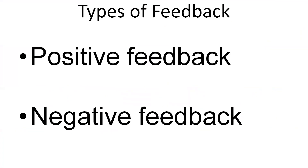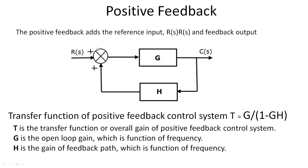There are two types of feedback: positive feedback and negative feedback. Positive feedback is the one which adds the reference input R(s) and feedback output. R(s) is the input and C(s) is the output. H is the feedback taken from C(s) and given back to the summing point. If there is a positive symbol at the summing point, we call it positive feedback. If there is a negative symbol, we call it negative feedback.